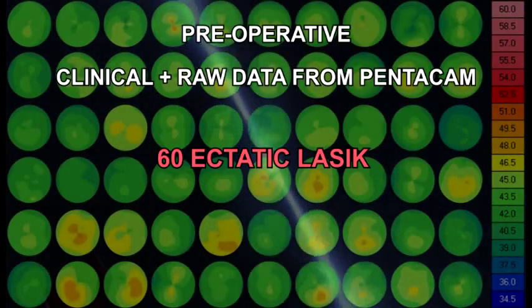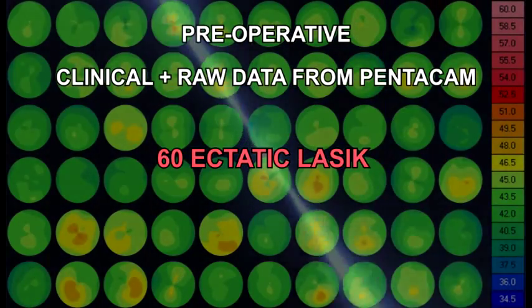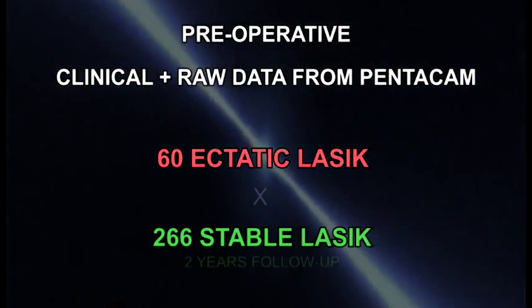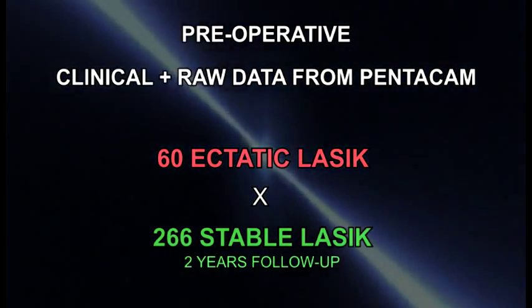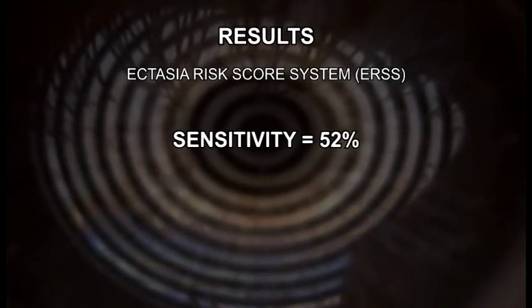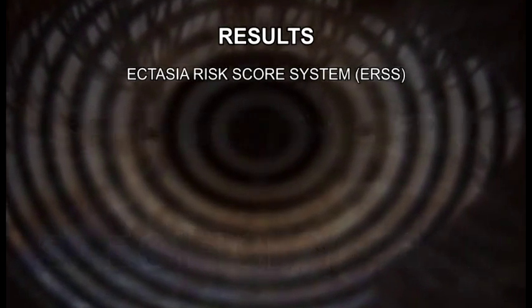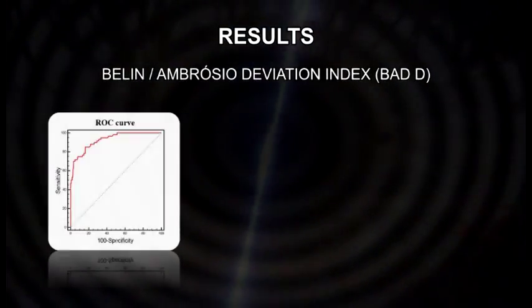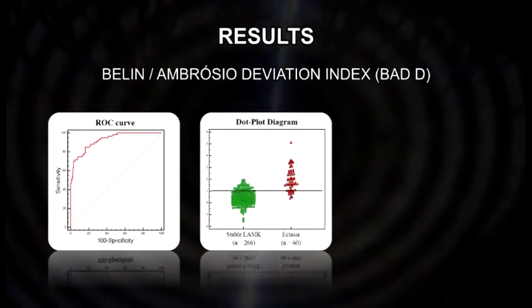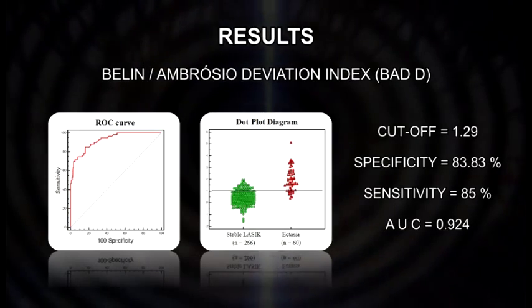Preoperative data from 60 post-LASIK ectasia cases was compared with 266 stable LASIK cases. In this study, the Randleman ectasia risk score system only had a sensitivity of 52% and a specificity of 82%. Whereas the BADD was the most accurate individual tomographic parameter for detecting ectasia risk.